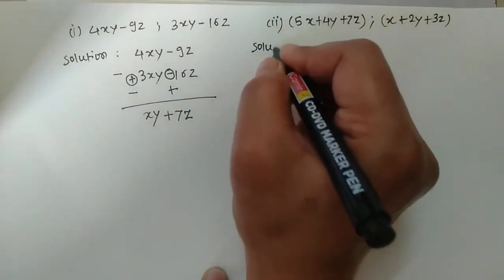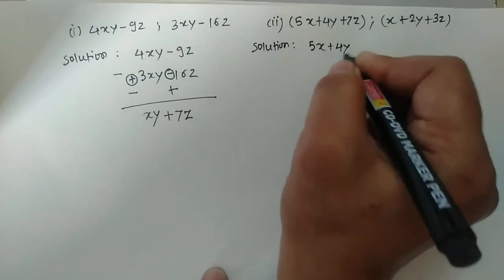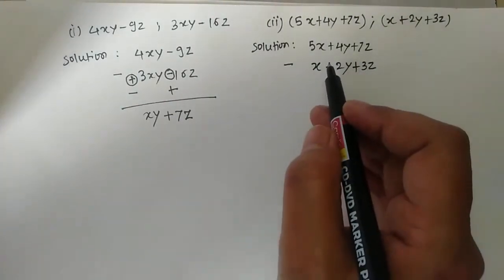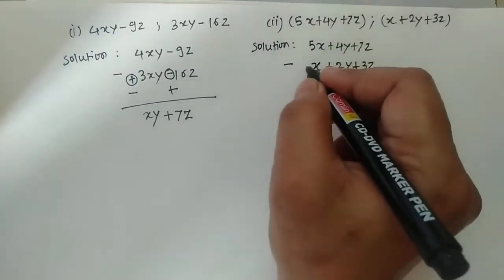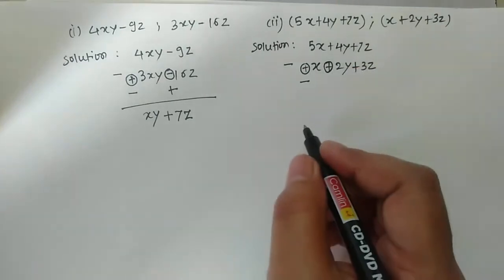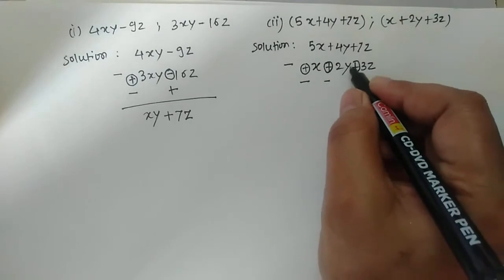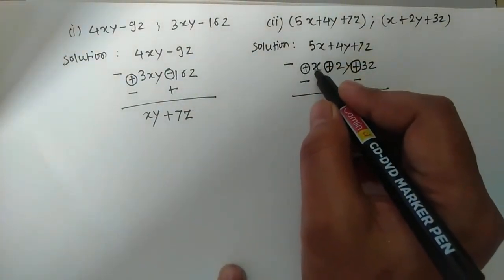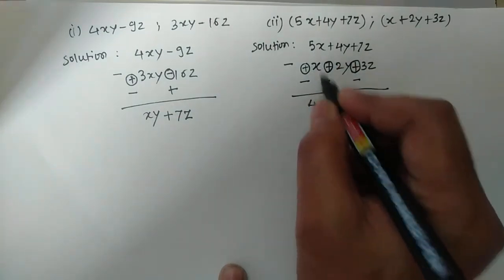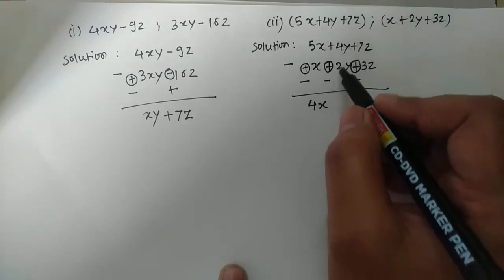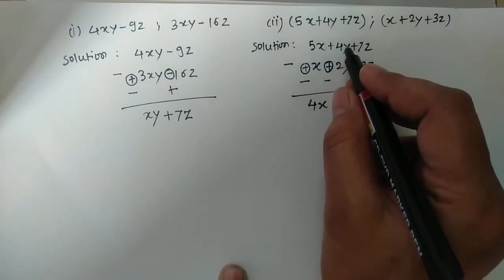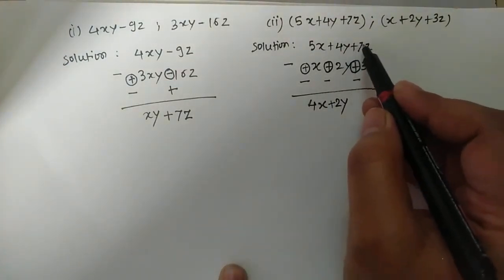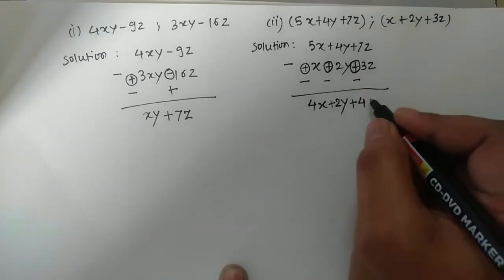See the second question. First expression is 5x plus 4y plus 7z, minus second expression x plus 2y plus 3z. Change the sign of each term of the second expression: all three terms are positive, so they all become negative. Now solve: 5x minus 1x is 4x. 4y minus 2y is positive 2y. And 7z minus 3z is positive 4z. This is the answer.